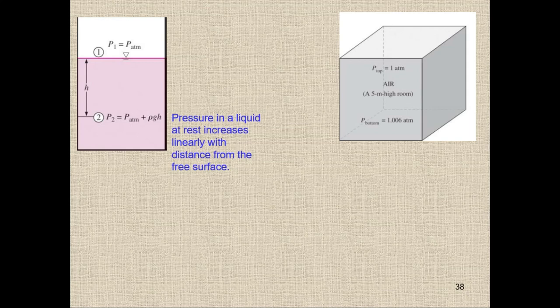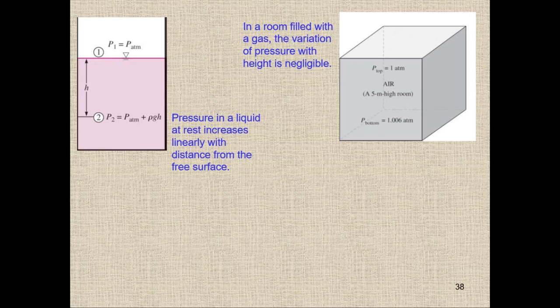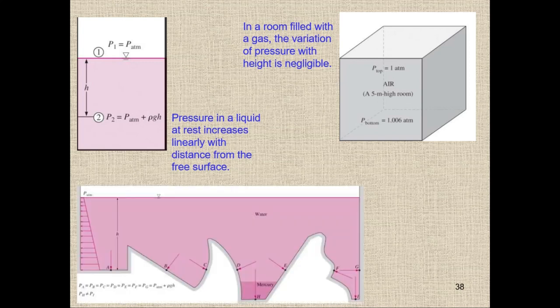Pressure in a liquid increases linearly with distance from the free surface. For gases, the pressure variation with respect to depth can be neglected because the density of gases is very low — the density of air is about 1.2 kg/m³ while water is 1000 kg/m³. So in a room filled with gas, the variation of pressure with height is negligible.